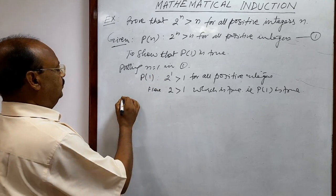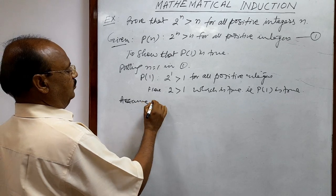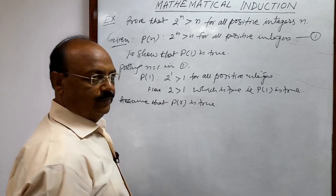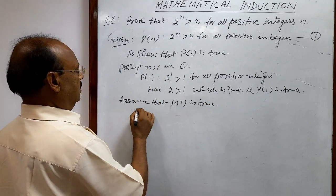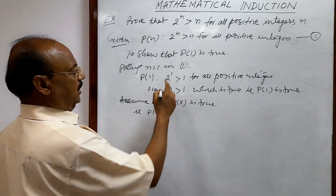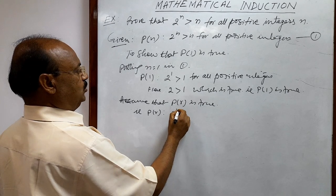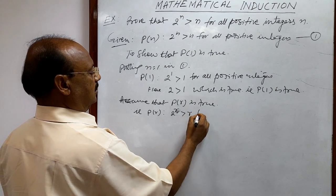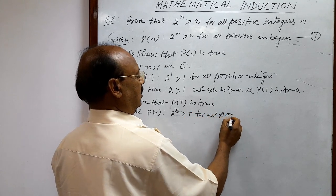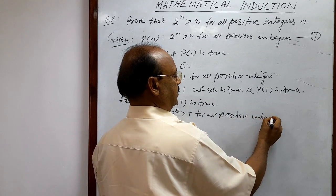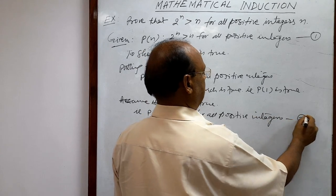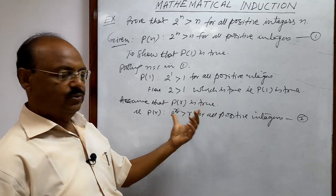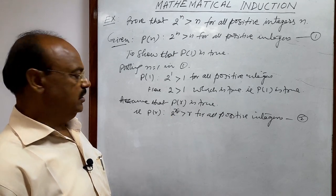Second step: we assume that P(r) is true. P(r) means putting n equal to r, so 2 to the power r is greater than r for all positive integers. Suppose this is relation number 2. We are assuming that this relation is true.